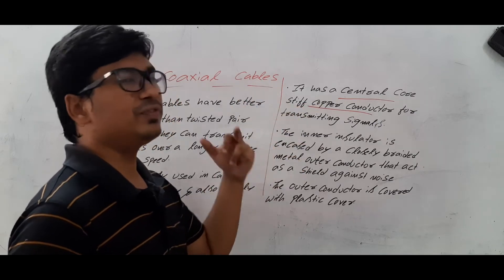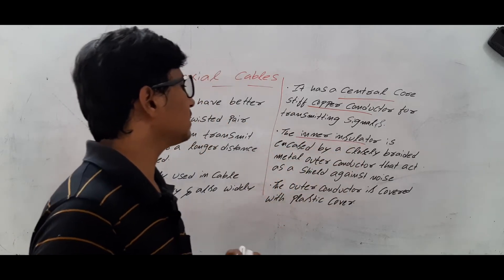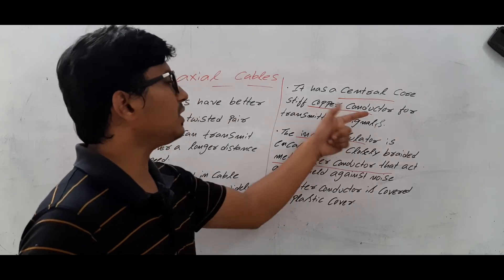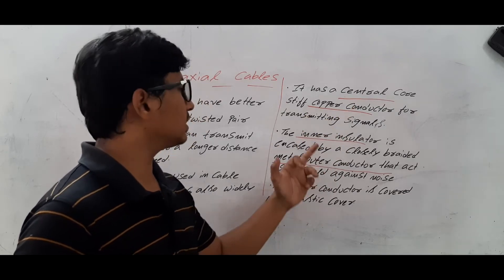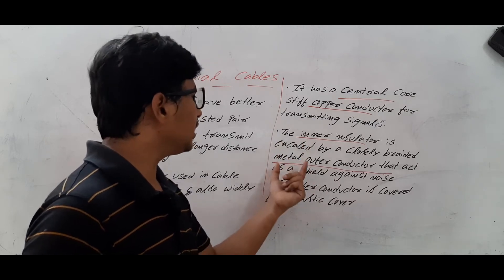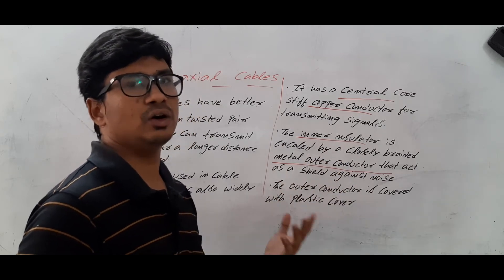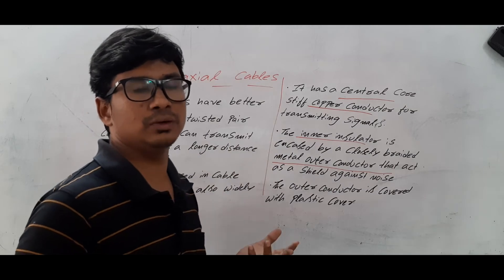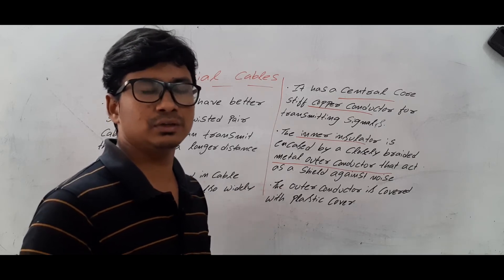On top of the central core copper conductor, we will have an insulator. The inner insulator is enhanced by a closely braided metal copper outer conductor. So, we have an internal core conductor useful for transferring data, then an inner insulator on top of it which will avoid the noise. On top of the inner insulator, we have a metal outer conductor that acts as a shield against noise and also from magnetic interference. This is why it is well protected compared to the twisted pair cable, and can be used for transferring long distance data with high data rate.